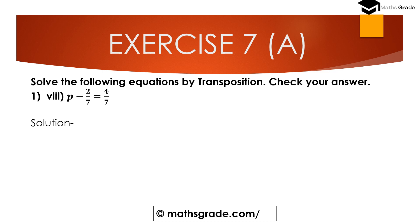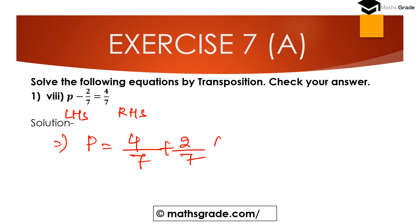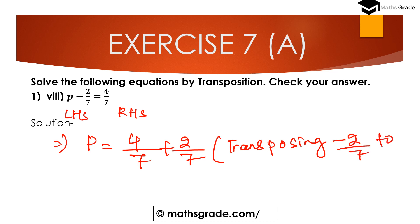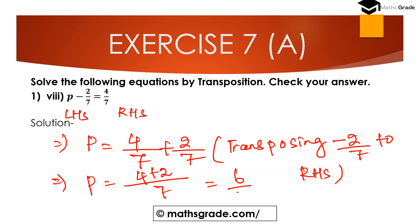Question number eight: p minus 2/7 equal to 4/7. Here p minus 2/7 is on the left-hand side and 4/7 is on the right-hand side. Transposing minus 2/7 to the right-hand side, minus changes to plus. So p equals 4/7 plus 2/7. The LCM is 7 and 4 plus 2 is 6, so p equal to 6/7.